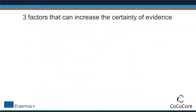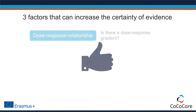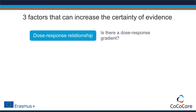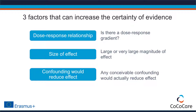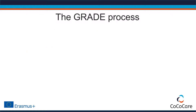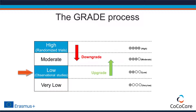On the other hand, there are three factors that can increase the confidence of the evidence. These factors are mostly relevant for non-randomized studies, but are sometimes also relevant for randomized control trials. Is there a dose-response relationship? Is the size of the effect large or very large? And would all plausible confounding that might occur in observational studies actually reduce the effect that we see? Based on these factors, investigators upgrade or downgrade the certainty of the evidence. Randomized control trials always start out at high certainty and can be downgraded if necessary, while observational studies always start at low certainty and can be up- or downgraded.